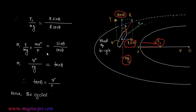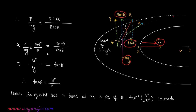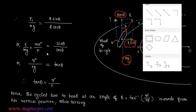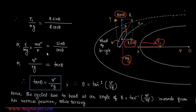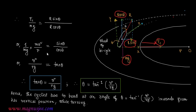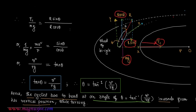Hence the cyclist has to bend at an angle of theta equal to tan inverse of V squared divided by Rg, inwards from his vertical position while turning the curved road. The cyclist has to lean or bend at an angle of theta equal to tan inverse V squared by Rg inwards from its vertical position while taking a turn.